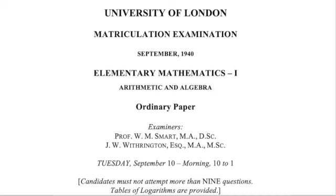Yet, believe it or not, university entrance examinations still went on. On the morning of September 10, a group of anxious students hurriedly took a look at their question papers as a clock struck ten. And today, after more than 80 years later, we are going to follow in their footsteps and recreate the experience of sitting the University of London matriculation paper, Elementary Mathematics I, Arithmetic and Algebra.